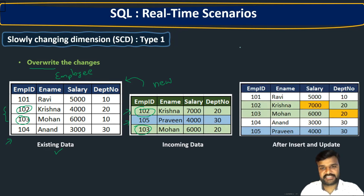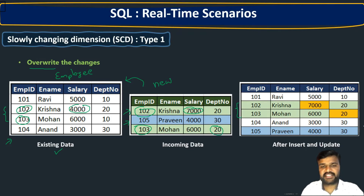So these two records are updated: salary is updated to 7000 — earlier it was 4000. Similarly, for employee 103, the department number changed from 10 to 20. Let us observe the same thing practically in SQL Server.